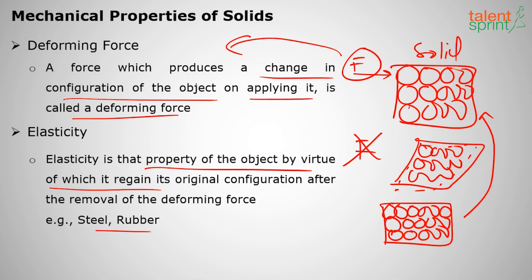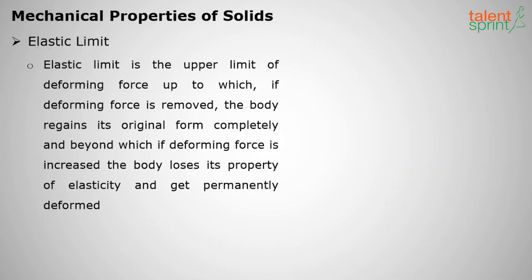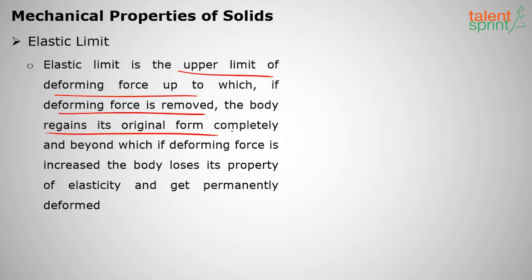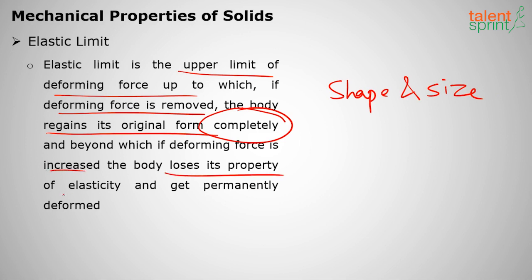Some bodies may be perfectly elastic, meaning when a force is applied they will totally regain their shape — such bodies are called perfectly elastic bodies. Some will be temporarily elastic. Moving on to elastic limit: it is the upper limit of the deforming force up to which, if the force is removed, the body can regain its original position completely. Beyond this limit, if the deforming force increases, the body will lose its elastic property.